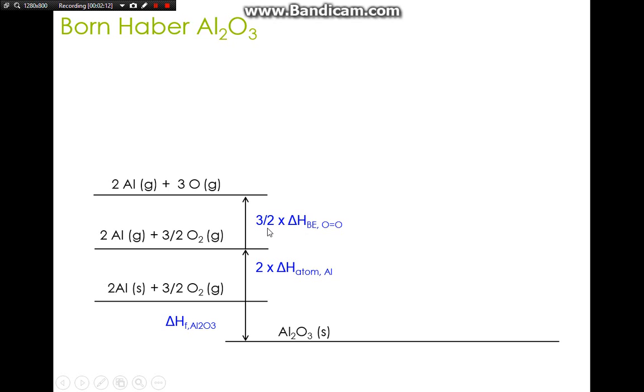We have to break 3/2 moles, so we multiply the bond energy by 3/2 to give us three atoms. Now we are at a very important milestone where the gaseous atoms are ready to have electrons added or taken away from them. We do the aluminum first.